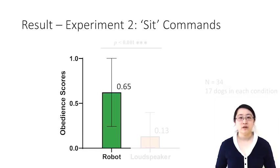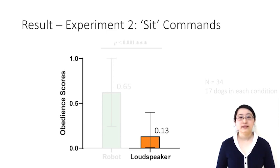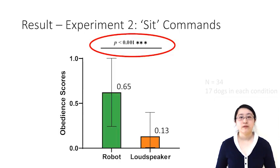In the robot condition, the average obedience score is 65%, indicating the dogs followed the robot commands 65% of the time. In the loudspeaker condition, the dogs only follow the command 13% of the time. And there are significant differences between the two conditions.